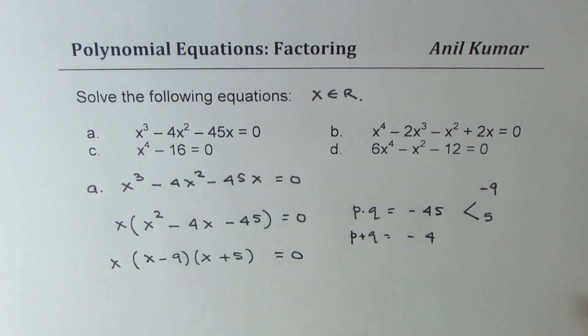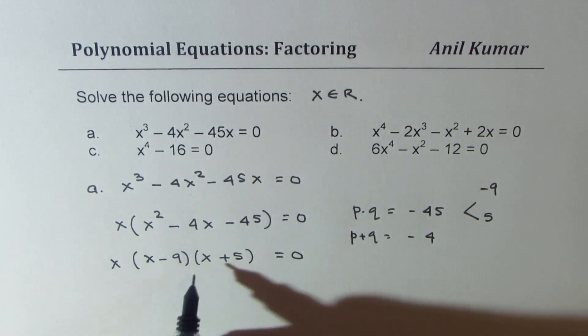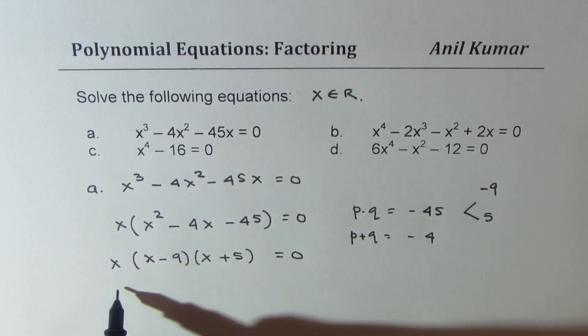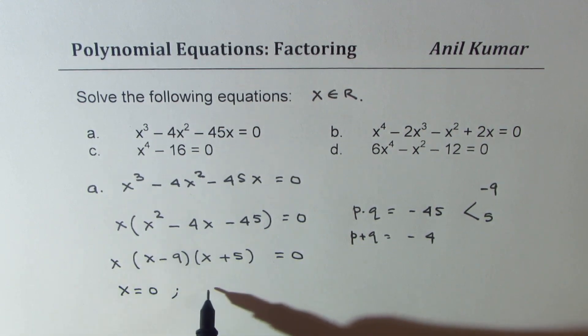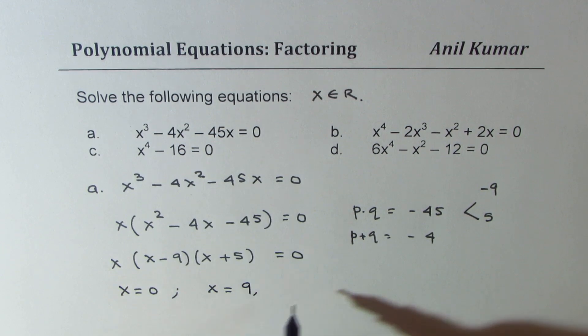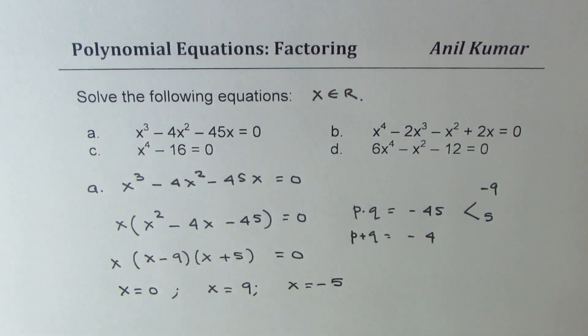This equation will give us three solutions. Each factor can be equated to 0 to get the three solutions: first being x equals 0, then x equal to 9, and then we have x equal to minus 5. That is how we can solve the first equation.